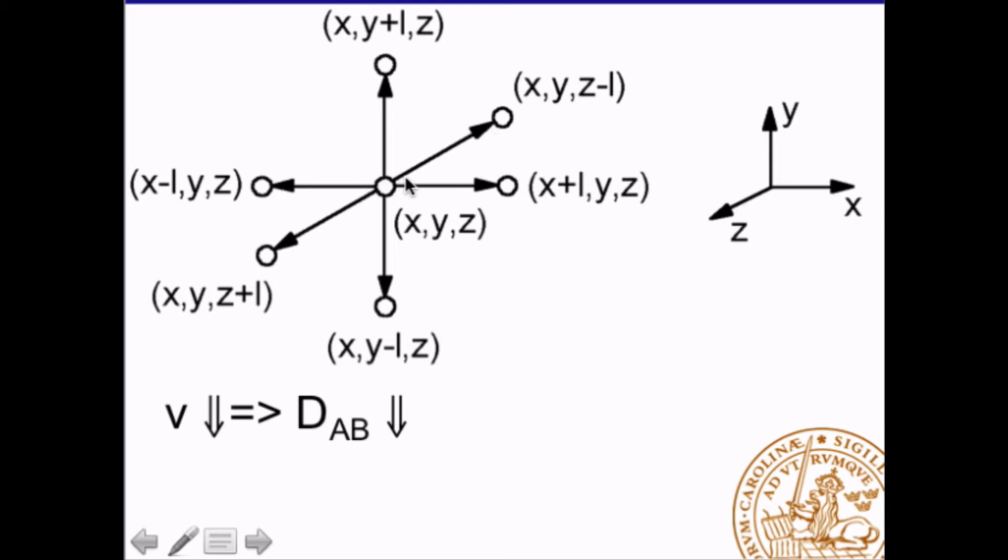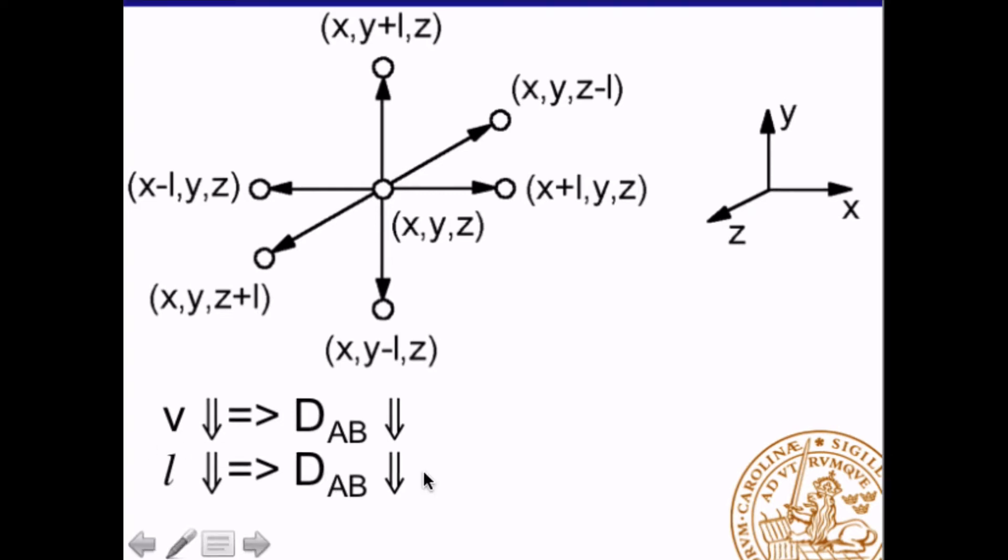And what about the distance? If we decrease the distance, well, if we go in this direction here with the molecule, if we travel all this direction, it may collide here and change direction. So, clearly, the smaller the distance, the smaller the diffusivity because it changes direction more often. And this molecule can move in six different directions. And all together we get that the diffusivity seems to be proportional to the velocity times the distance between molecules divided by six.